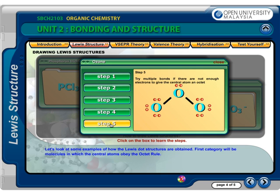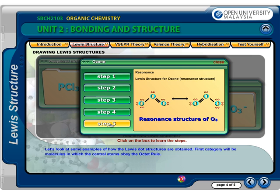Step 5: There are only 6 electrons on the central atom, 2 short of an octet. Try a double bond to see if the central atom can achieve an octet. Now the central atom has an octet. The Lewis structure of ozone has one single bond and one double bond. There are two possible positions of the double bond, thus giving two structures. The two equivalent Lewis structures are called resonance structures.